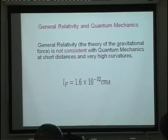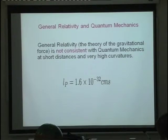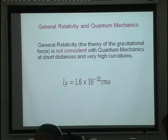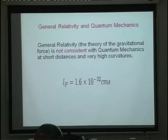What happens is the following: you have two good theories of nature — one is quantum mechanics and one is general relativity. Both of them are very good in their regimes of description, but when you try to put them together, which is necessary to understand the origin of the universe or the theory of elementary particles at very short length scales, there is a mathematical problem: these two theories are not consistent.